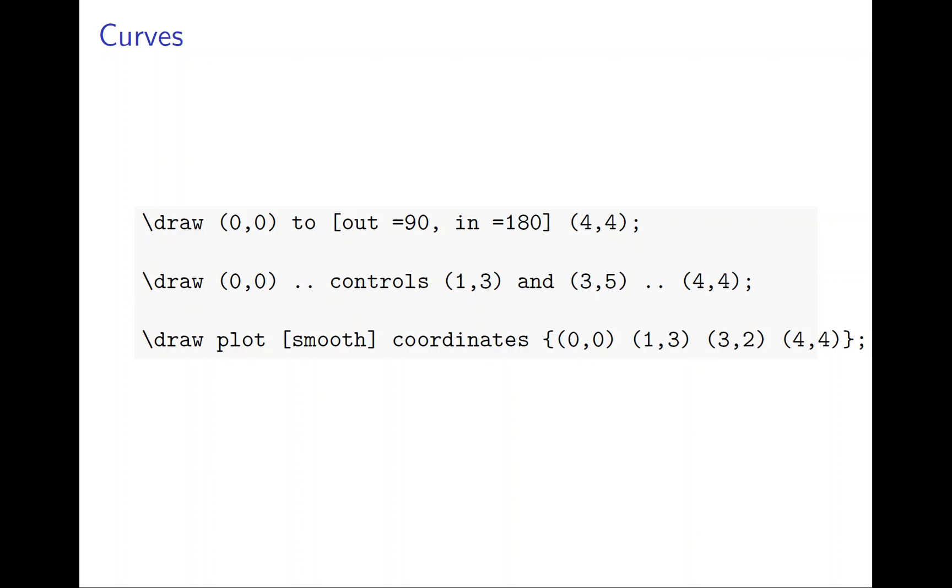Now after drawing a line, the more complicated thing to draw a curve. That's one way to draw a line because this line is always from one point to the other. But curve is always very difficult because how to draw a curve is a very complicated thing.